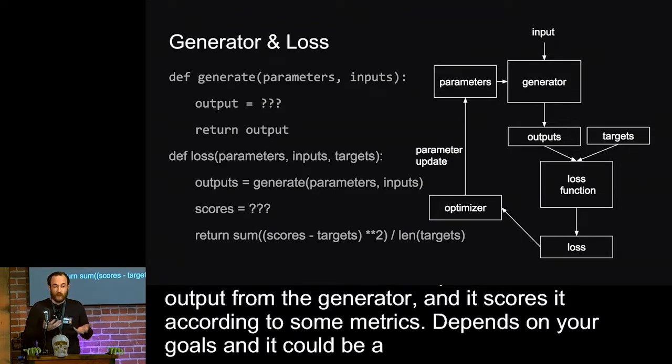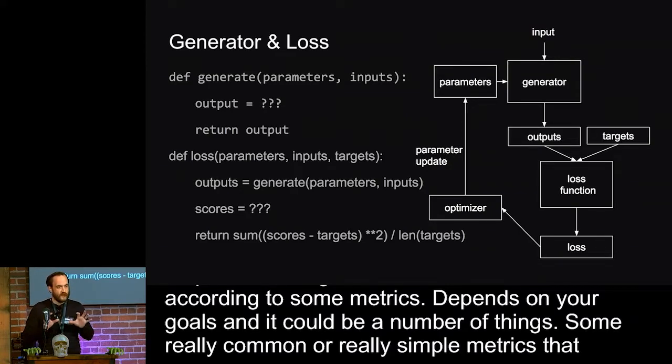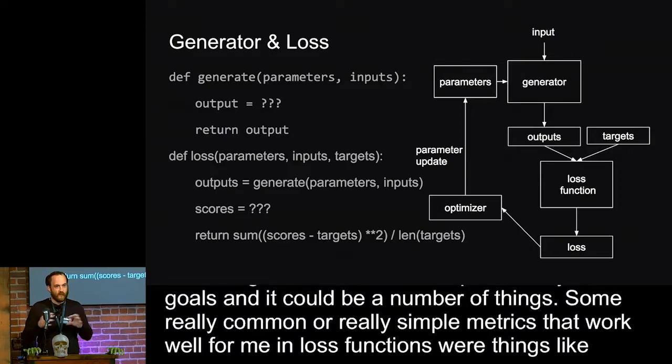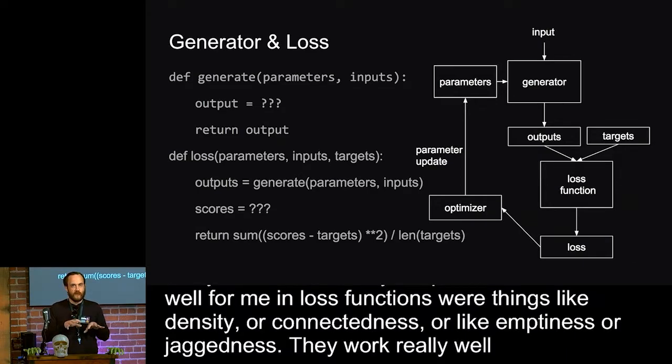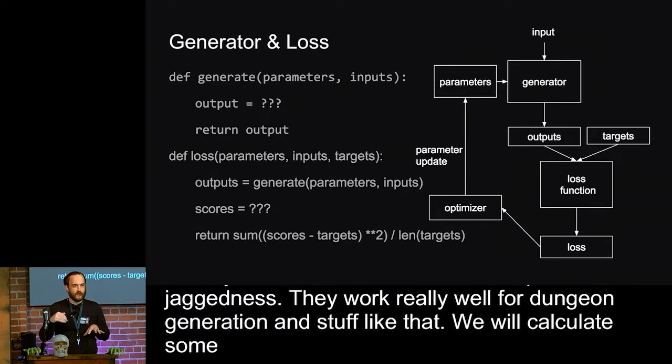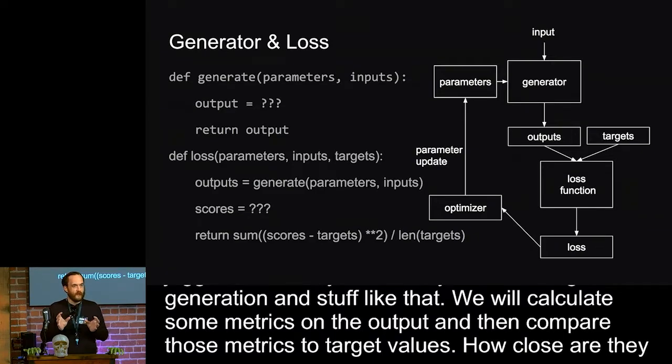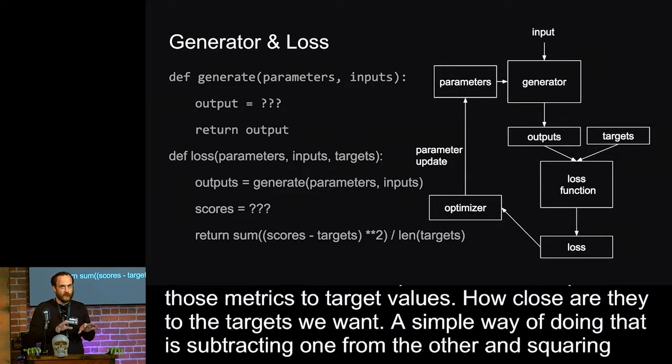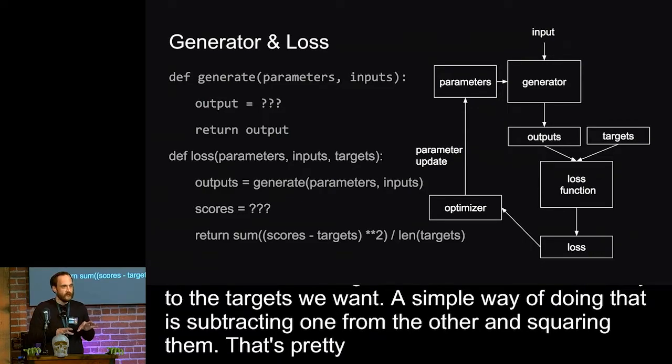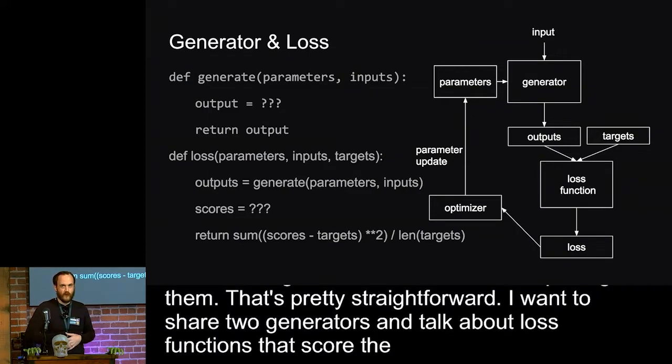And it could be a number of things. Some really common or really simple metrics that work well for me in loss functions were things like density or connectedness or emptiness or jaggedness. They work really well for dungeon generation and stuff like that. So we're going to calculate some metrics on the output, and we're going to compare those metrics to target values. How close are they to the targets that we want? And a really simple way of doing that is just subtracting one from the other and just squaring them. So I want to share two generators, and I want to talk about some loss functions that score the output of those generators. And then I want to circle back to optimization.